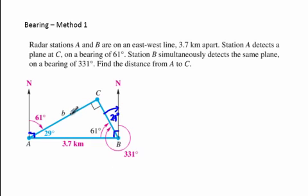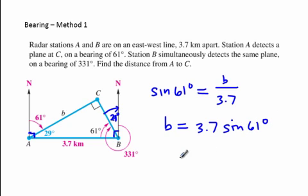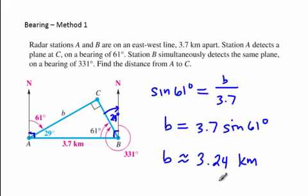Now we can find distance b — the distance from station A to the plane. Using the sine function: sine of 61 degrees equals opposite side b over hypotenuse 3.7. Cross-multiplying, b equals 3.7 times sine of 61 degrees. Make sure your graphing calculator is in degree mode. That gives approximately 3.24 kilometers.